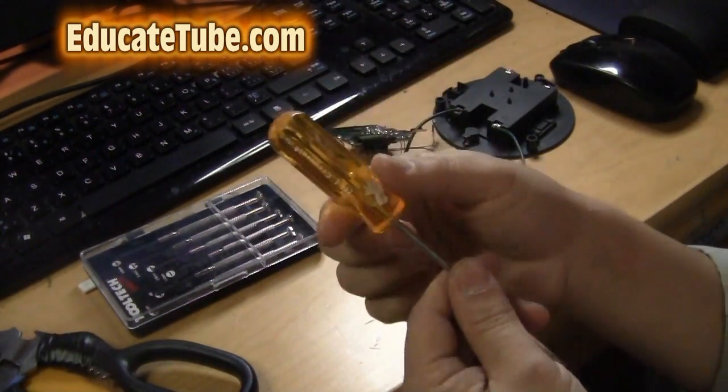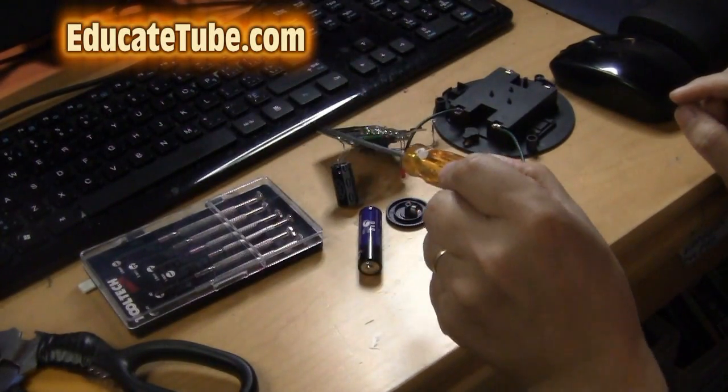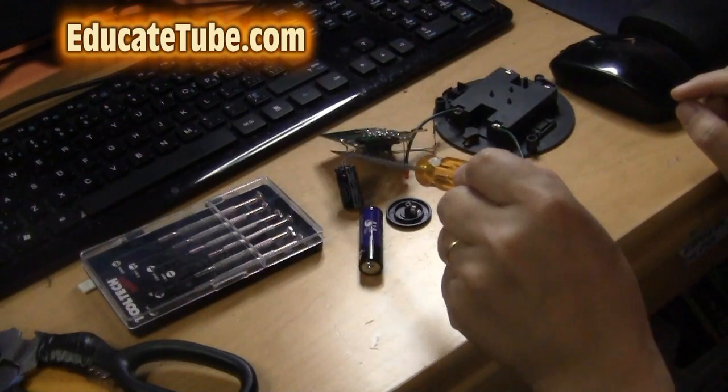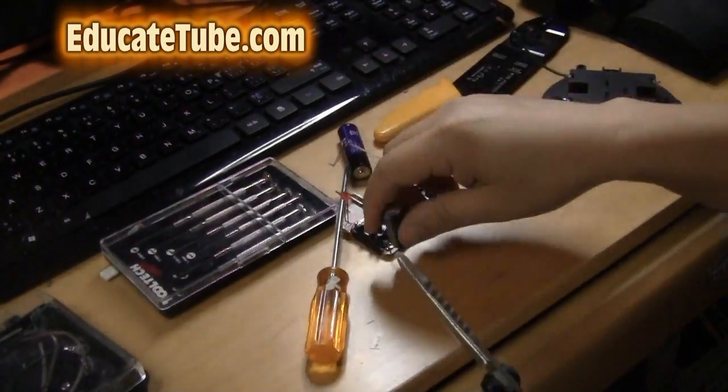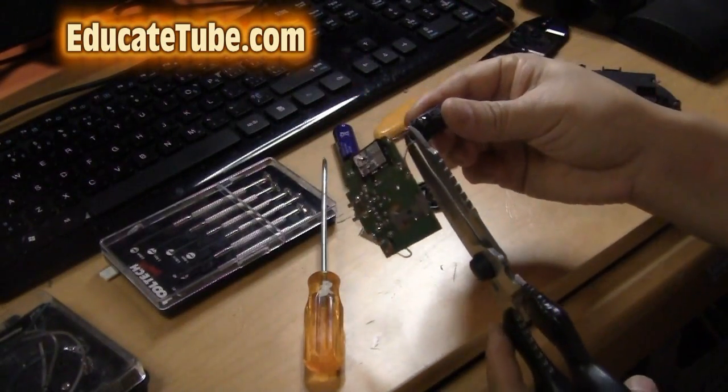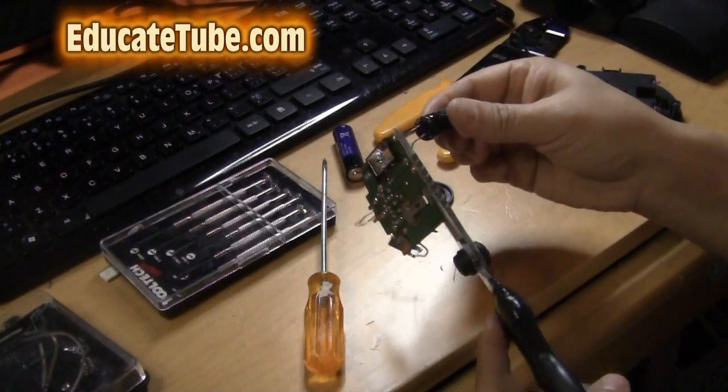The first thing you want to do is make sure you neutralize the capacitor. So, I use a screwdriver to attach both positive and negative terminal together. That will neutralize the capacitor. Once you do that, you can cut the capacitor out. So, you don't want to get shocked.